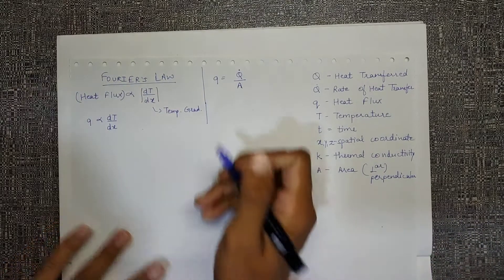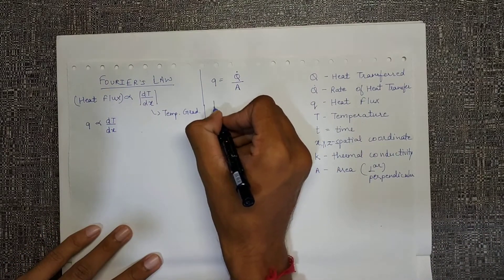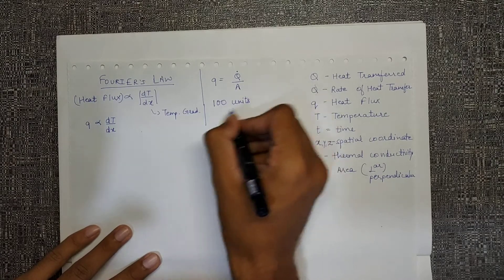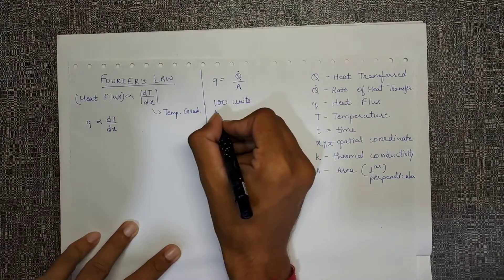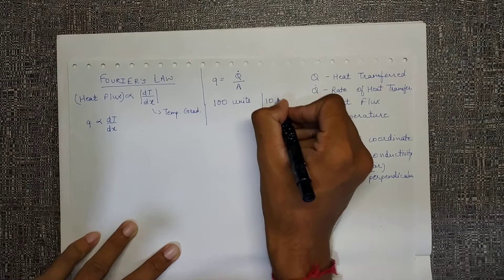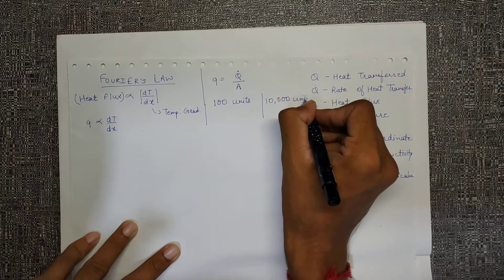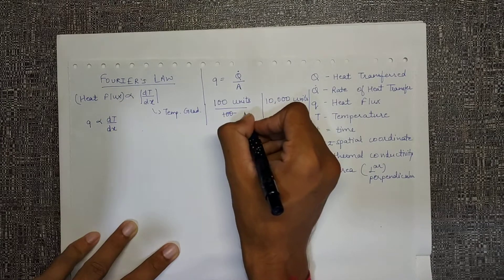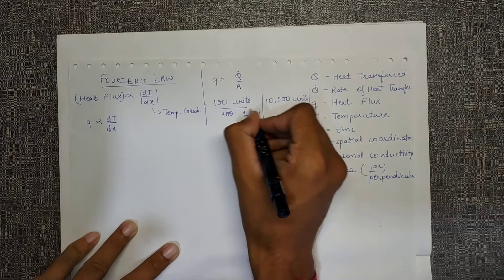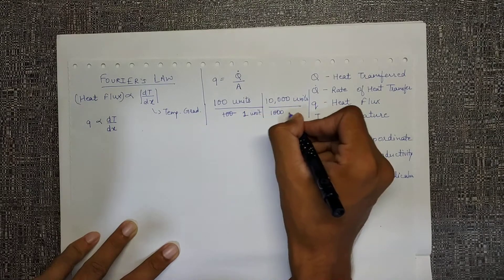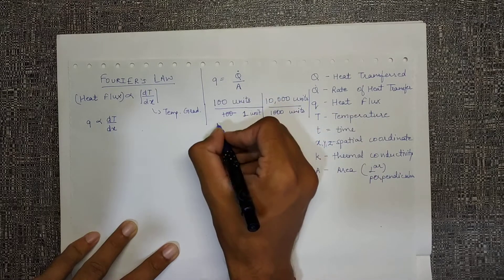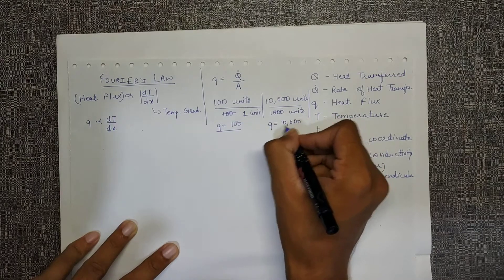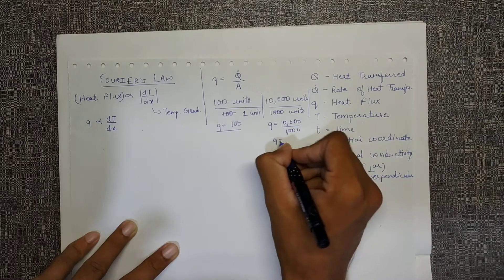Just to give you some analogy: if the rate of heat transfer was 100 units, let's say we have 10,000 units. These are two possibilities. But if the area is 100, if the area is 1 unit and in this case the area is 1000 units, this means that my q will be 100 in this case and in this case my q will be 100,000 over 1000. That means q is only 10.